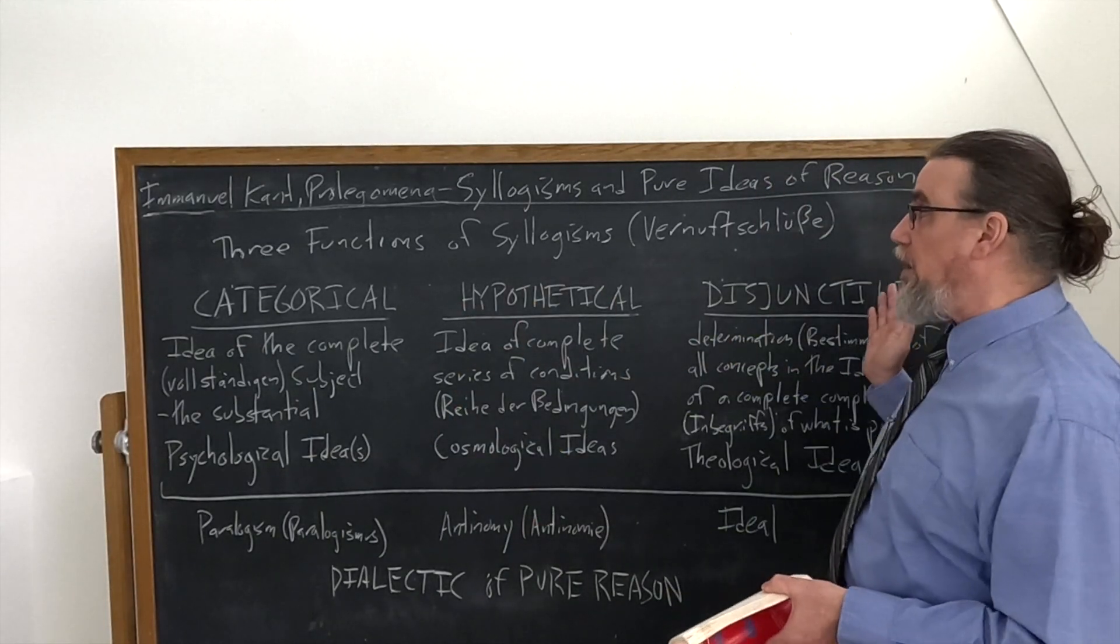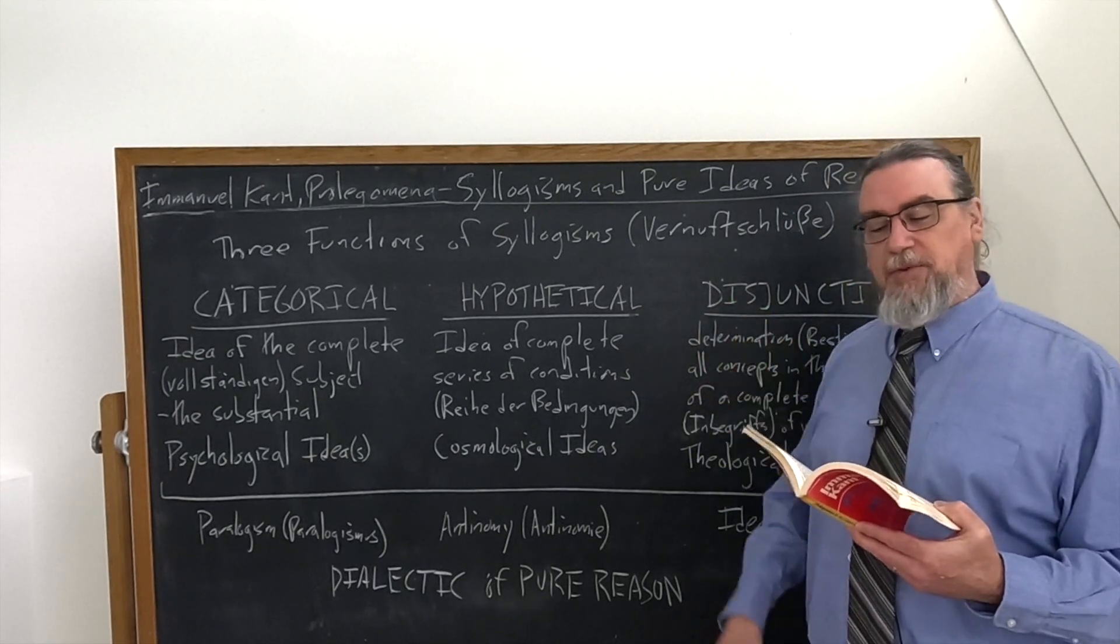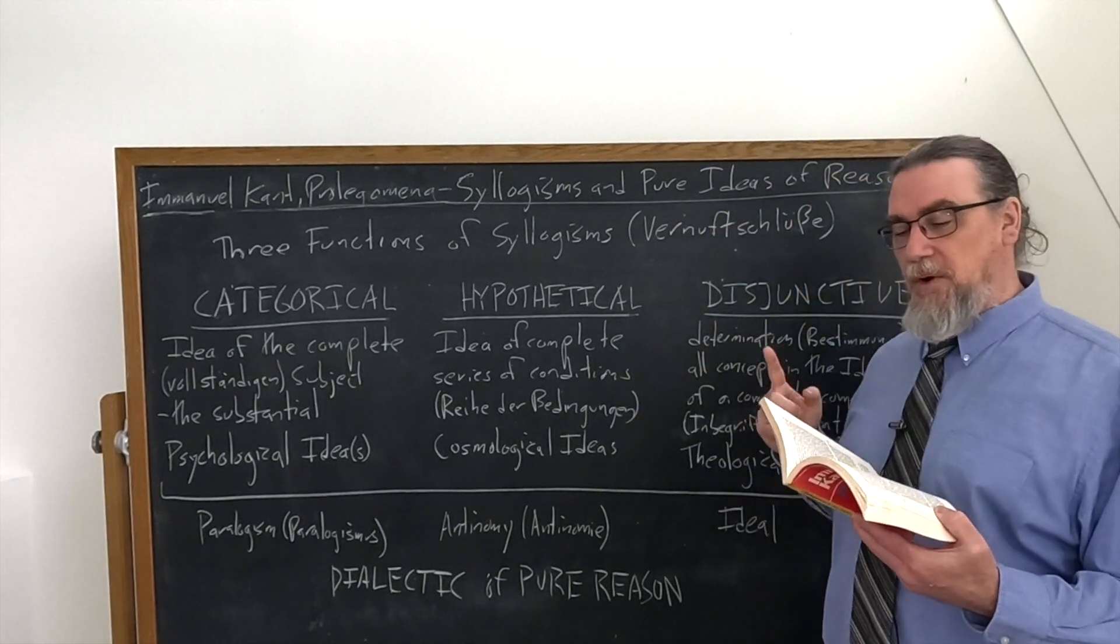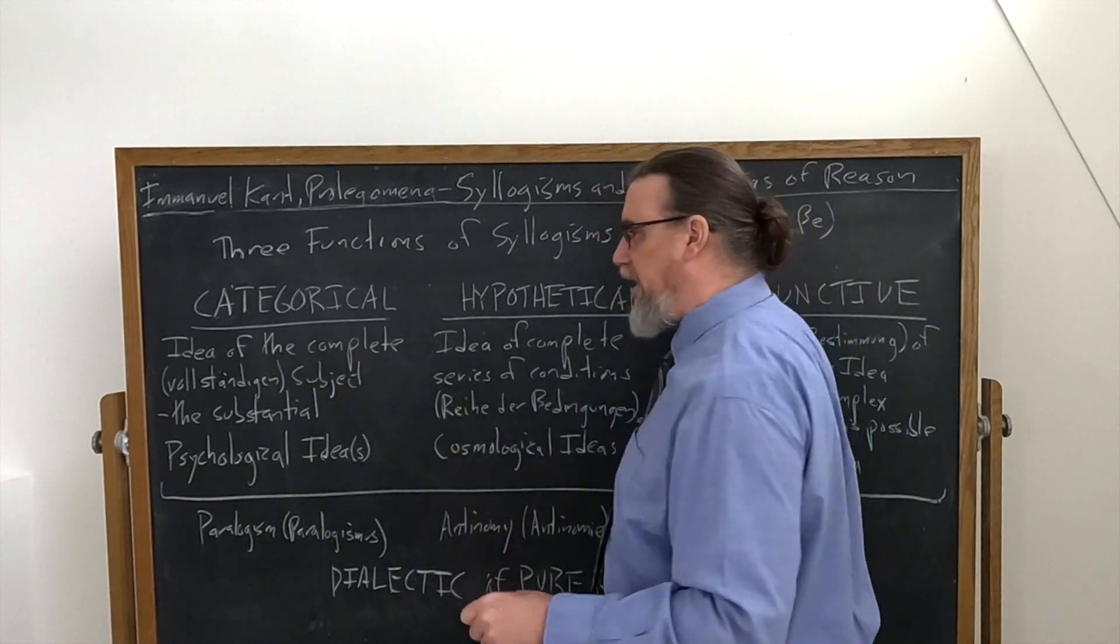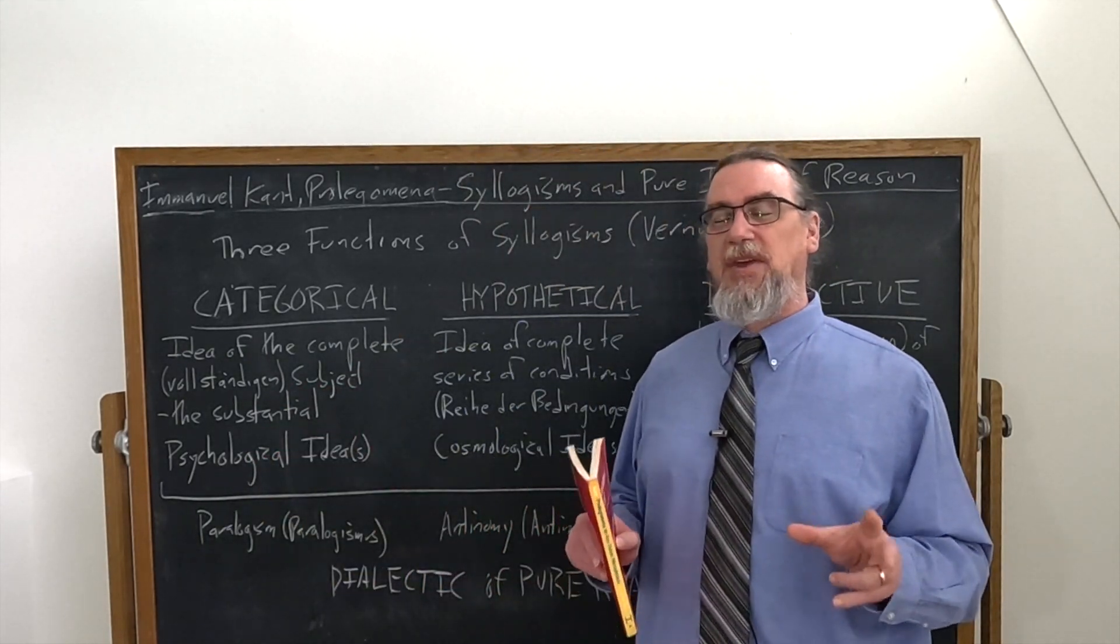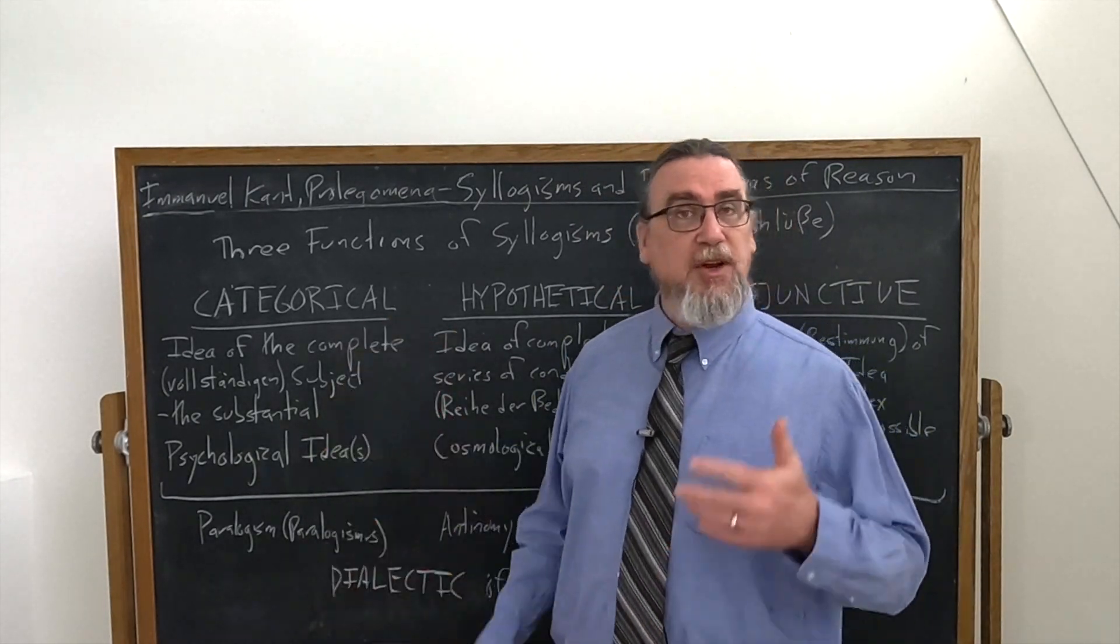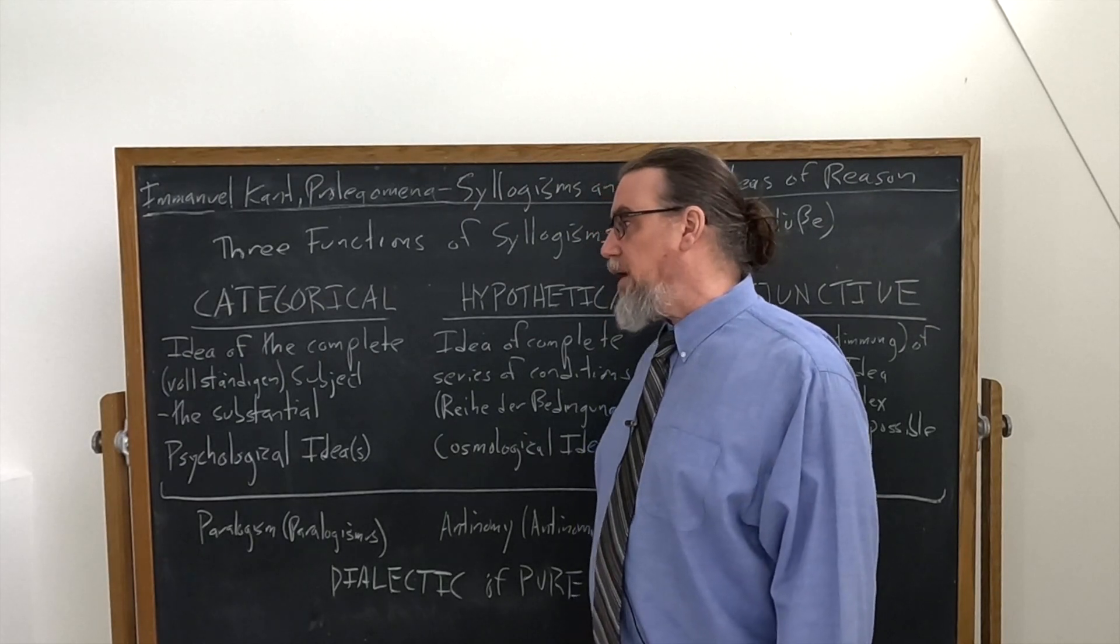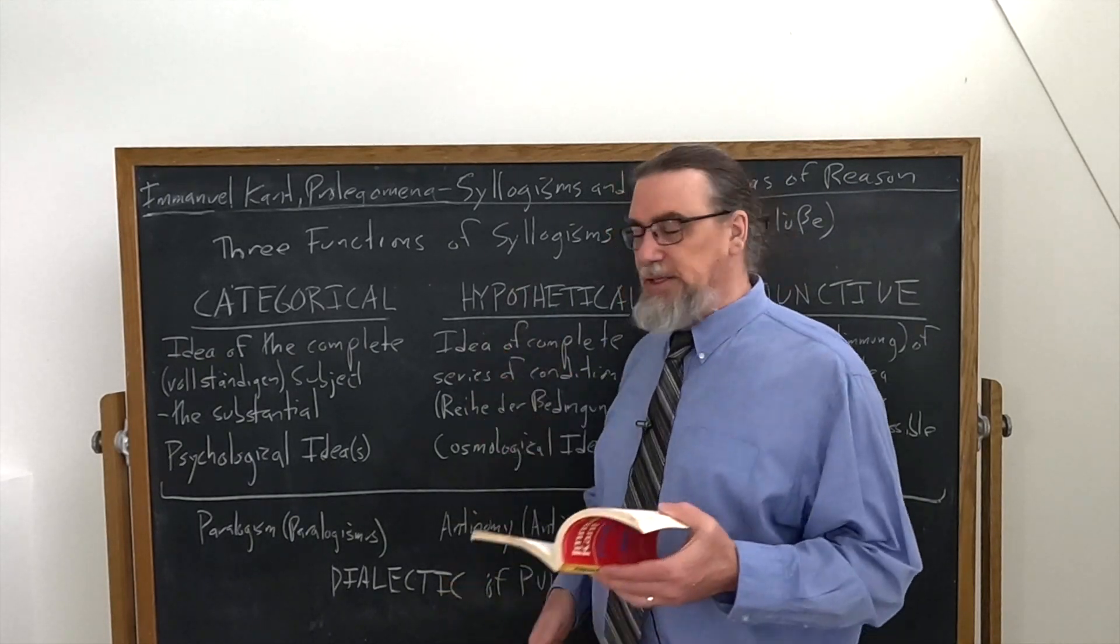So we've got these three functions of syllogisms, three kinds of syllogisms. And he's going to tell us the concepts of reason that are founded on these contain, therefore, three things. First, notice what he begins by saying, the idea of the complete—vollständigen is a term that's going to be used in each of these—subject. And he doesn't say substance, but rather the substantial. So we have an idea of a subject, of a complete subject, of a substance. Metaphysicians have been using this for millennia by the time that Kant is talking about this. So that's going to be one kind of idea or ideas, as we're going to come to in a moment.